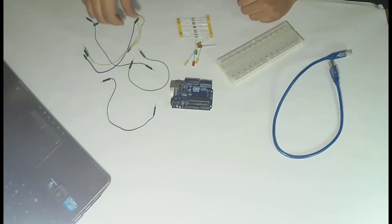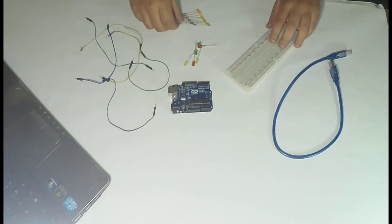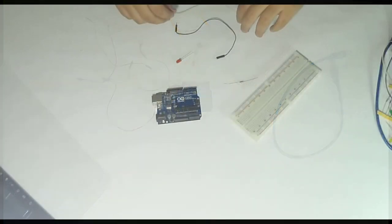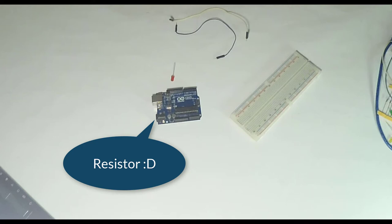For this we're going to need jump wires, Arduino (I'm going to use an Arduino Uno), breadboard, some resistors, and some LEDs. Let's do this. First of all, I'm going to use one LED only with a resistance. I chose a resistance of one kilo ohm and two jump wires.